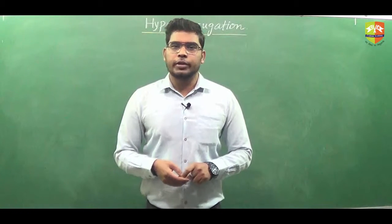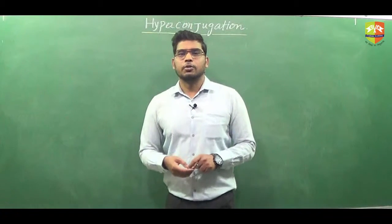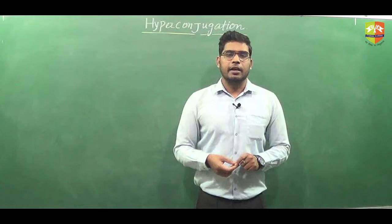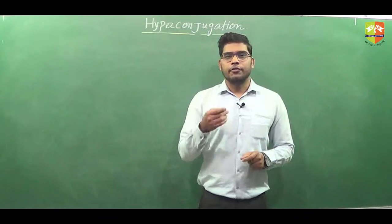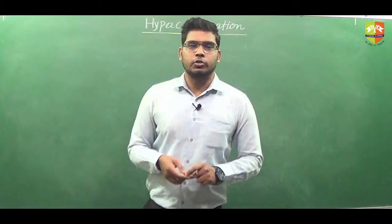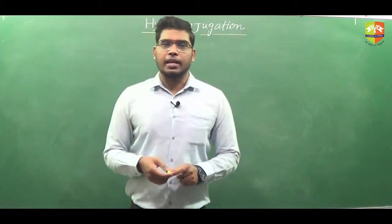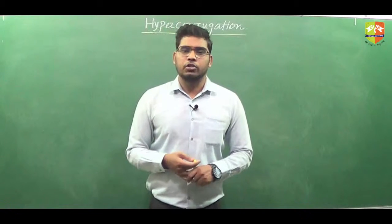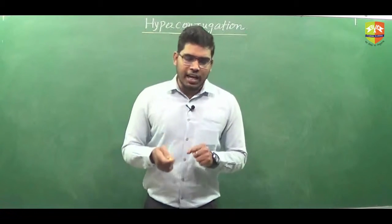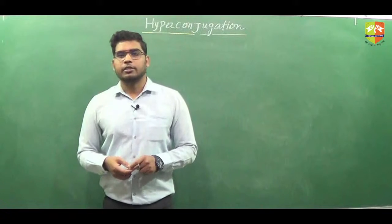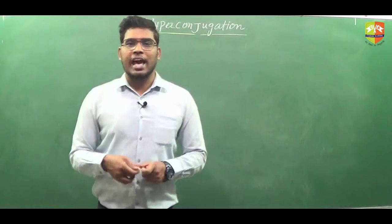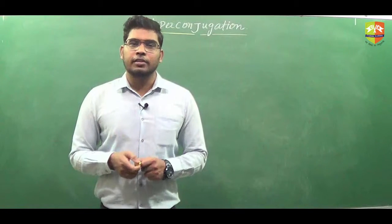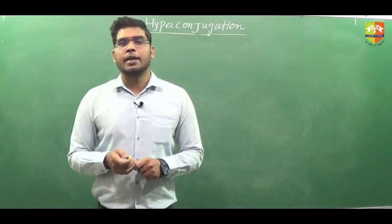Today in this session we are going to discuss further about hyperconjugation. Last class, we discussed about how hyperconjugation is possible in alkene and we also saw a few applications of hyperconjugation, like stability of alkene, heat of hydrogenation, and heat of combustion. I have already discussed that hyperconjugation is possible in alkene, carbocation and free radical; it is not possible in the case of carbanion.